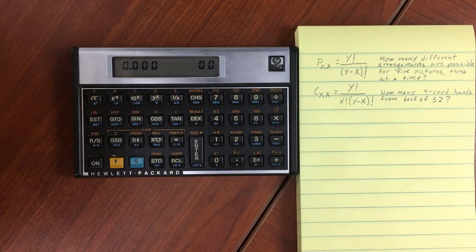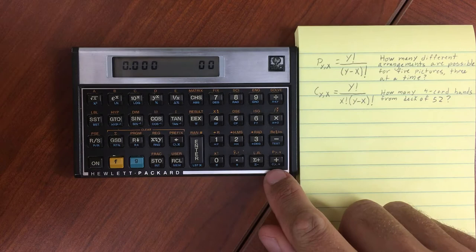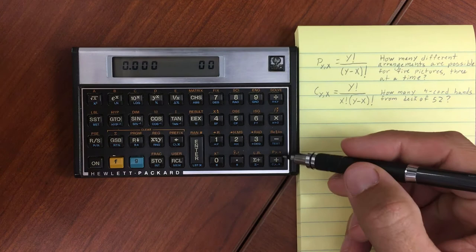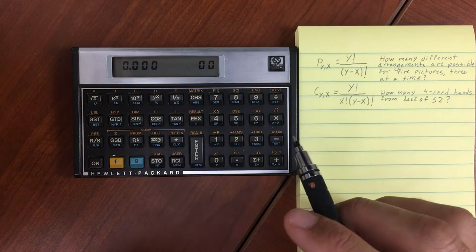The HP-15C has two different probability functions, and they are both located over here. We have permutation and we have combination. You'll notice that they've put the Y and the X there to indicate what portion of the stack is going to be used.